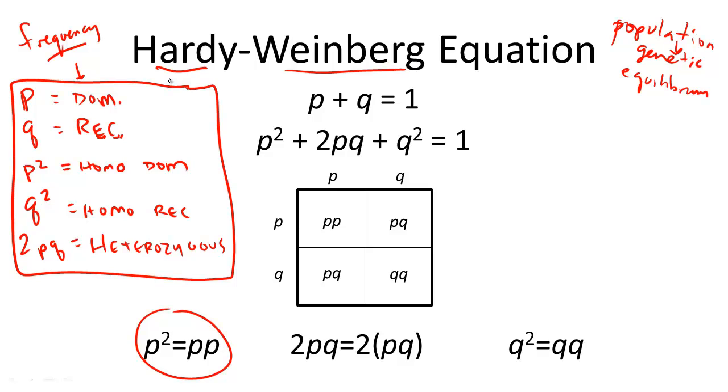So what we need to also know is that in a population, the total frequency of dominant and recessive alleles, since there are only 2, must be equal to 100%. Therefore, this equation, p plus q equals 1, makes sense.